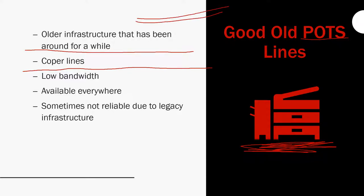You can technically use an RJ45 port on a POTS line — RJ45 being the Ethernet connection — but on the POTS line you're only going to use about two of those cables. It has slow bandwidth; it uses less bandwidth than Voice over IP, and the quality is degraded.